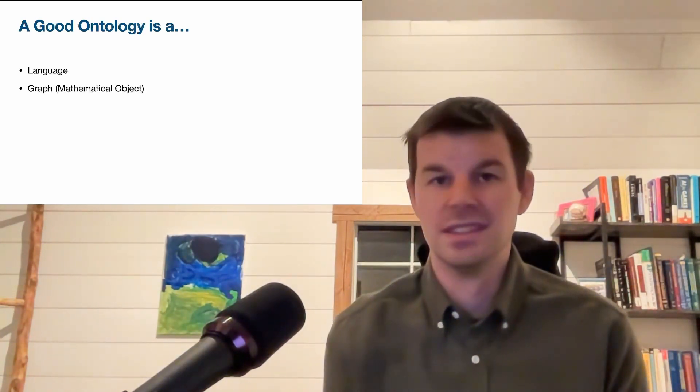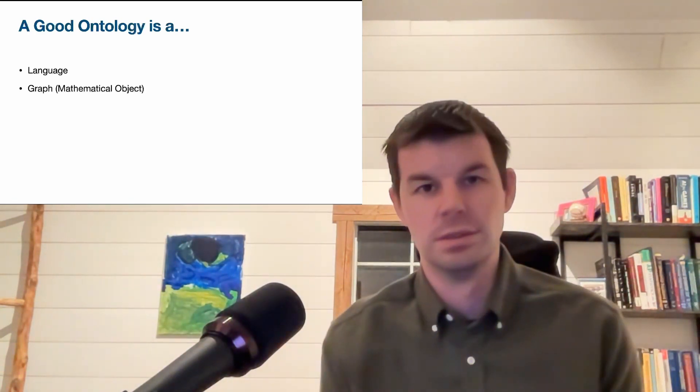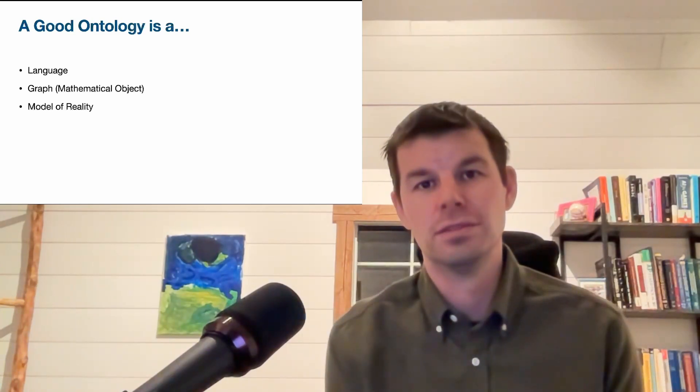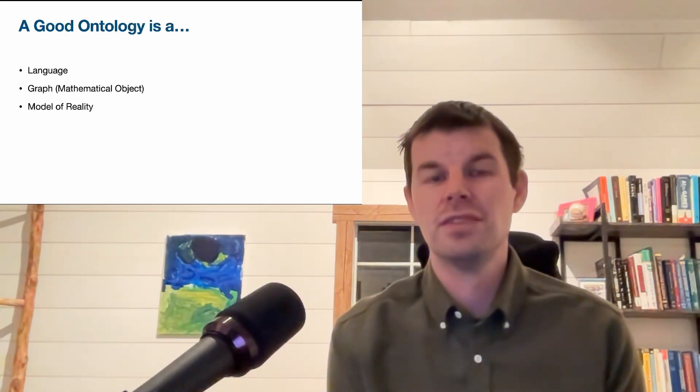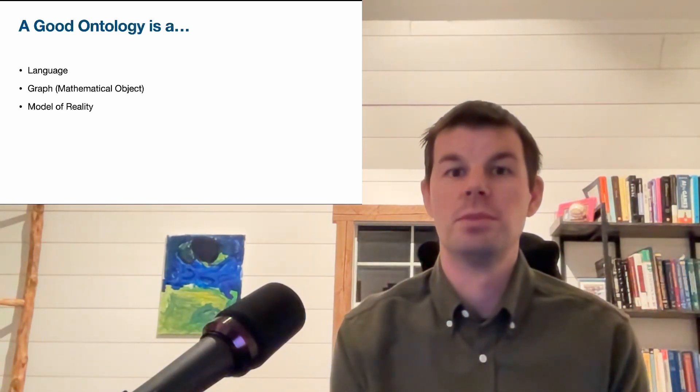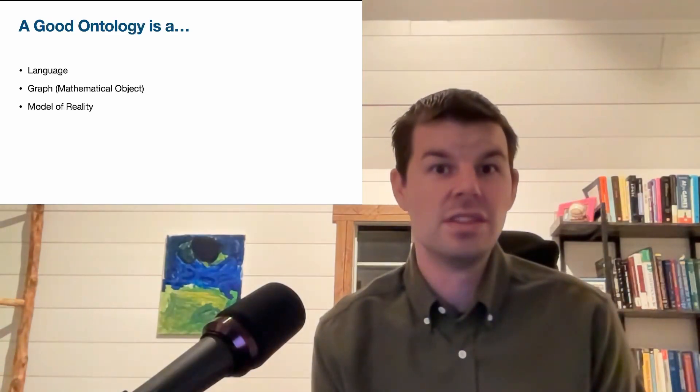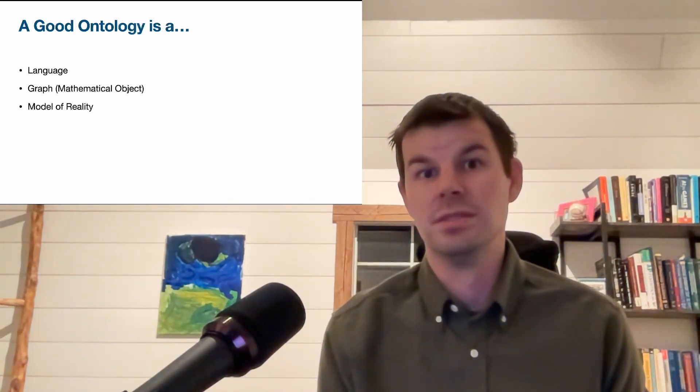In this video I'm going to give you three more ways to think about what an ontology is and how you can use it. A good ontology is three things: it's a language, it's a graph in the sense of being a mathematical object with nodes and edges, and it's a model of reality. We'll look at each of those in turn and think about how those shape the way you build and use an ontology, as well as how you maybe shouldn't use that ontology.